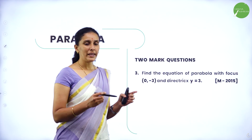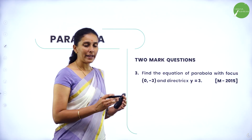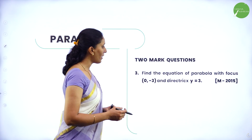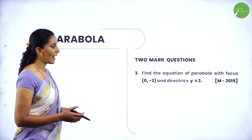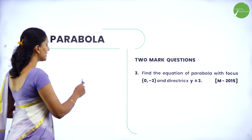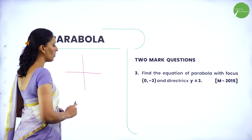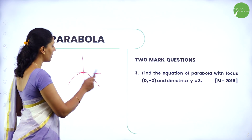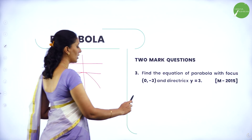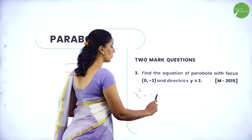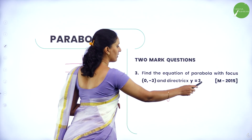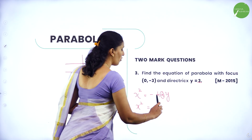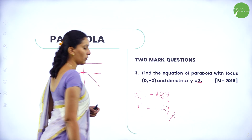Next, two-mark questions involve writing the equation of a parabola from its characteristics. Question: find the equation of parabola with focus (0, minus 3) and directrix y = 3. When the focus is at (0, minus 3), it lies on the negative side of the y-axis, so it is a downward parabola. The general equation is x² = minus 4ay, and the value of a is 3. Substituting, the equation is x² = minus 12y.